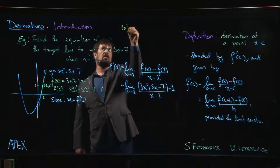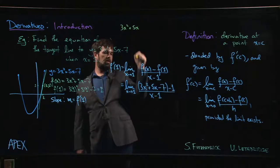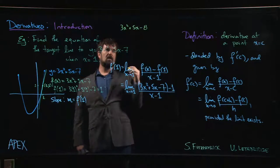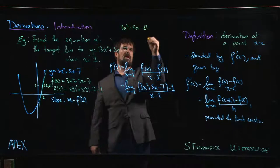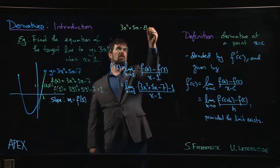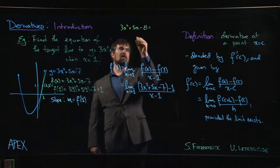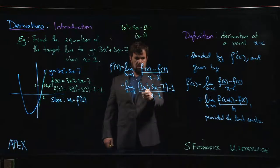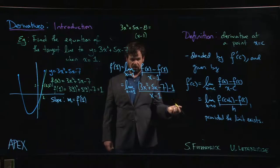We have 3x squared plus 5x, now minus 8. And we want to factor that. Now we know we can save ourselves a little bit of trouble here because we already know that x minus 1 is a factor. Because we know if we plug in x equals 1, we get 0.